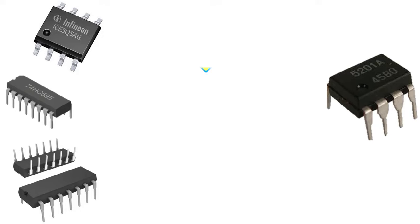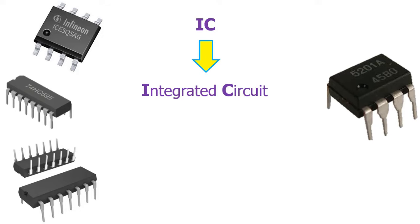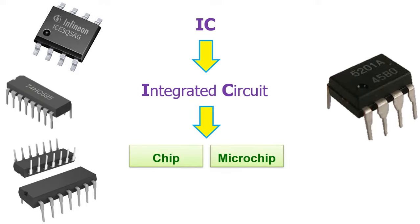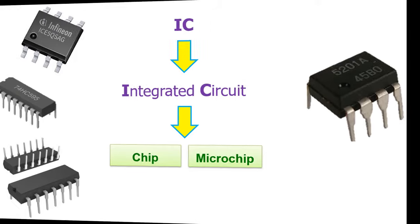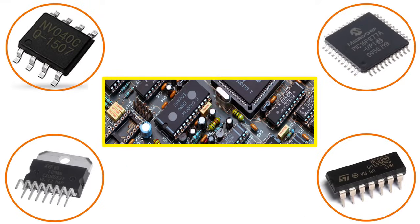For integrated circuits, the abbreviation IC, which is the initials of the words integrated circuit, is used. Also referred to as a chip or a microchip. It is a group of electronic circuits placed on a metal plate designed with silicon semiconductor materials. Within the integrated circuits, each electronic circuit element is smaller than the independent, discrete circuits. It has been shrunk to the extent of containing millions of transistors and electronic circuit elements in the area of a fingernail.